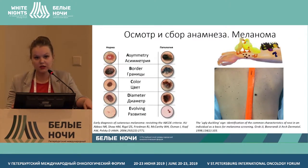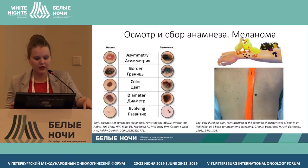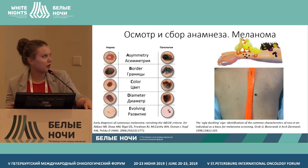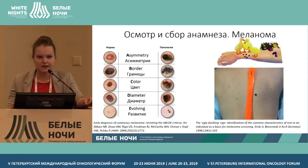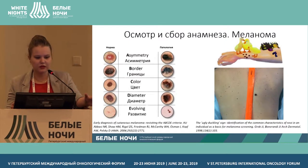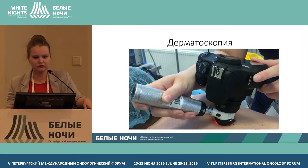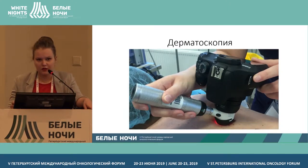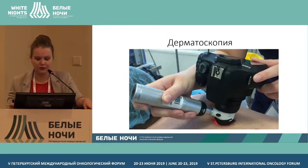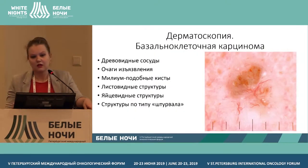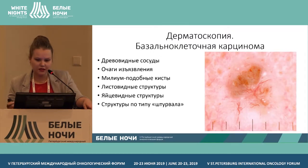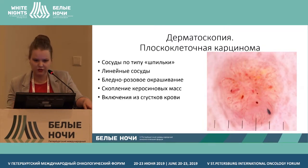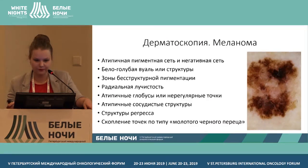While examining a patient, we have to look at the 'ugly duckling' sign, where there is a difference from the surrounding nevi. The ABCDE rule is important — doctors should pay attention to changes in color, margins, and asymmetry. Dermoscopy is a good instrument which helps to identify typical structural elements for basal cell carcinoma, squamous carcinoma, and melanoma.